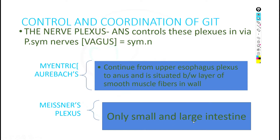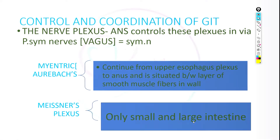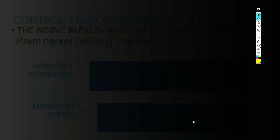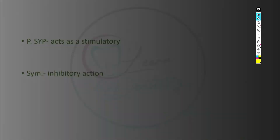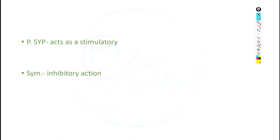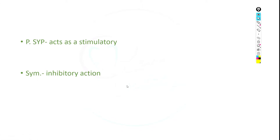The parasympathetic system acts as a stimulatory system, and the sympathetic system acts as an inhibitory system.